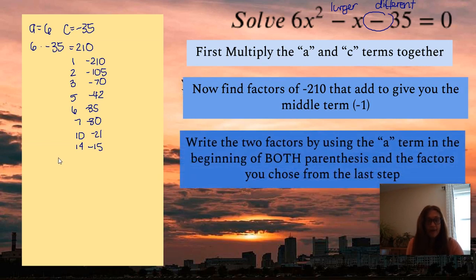So now we're going to write the two terms by using the a value in the beginning. So the a value was 6. So we're going to have 6x in front of both of them. And then we're going to write in our numbers as positive 14 and negative 15 in the end. Now there's the landing of the plane.